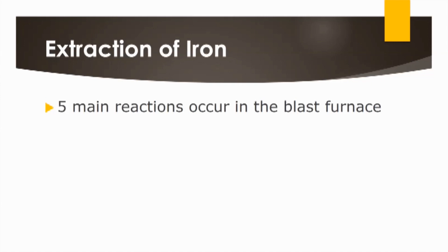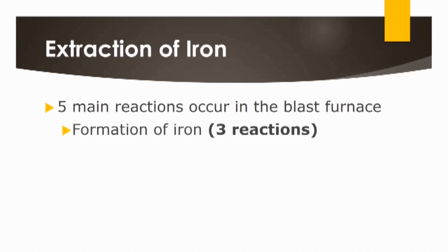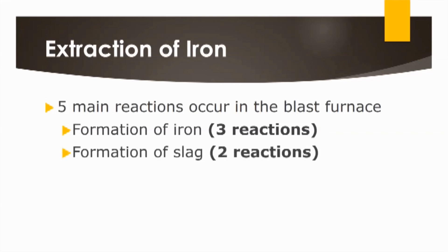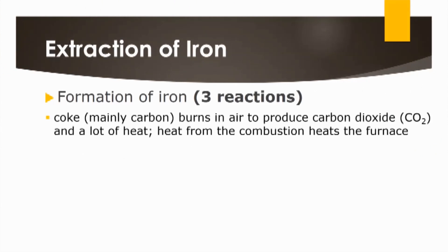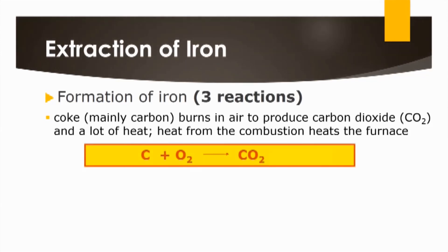We can categorize the five reactions into two groups. First, there are three reactions related to the formation of iron. In the formation of iron, the first reaction is that coke burns in air to produce carbon dioxide and a lot of heat. This heat from combustion is required to heat up the entire furnace. The chemical equation shows carbon from coke reacting with oxygen to give carbon dioxide and heat.